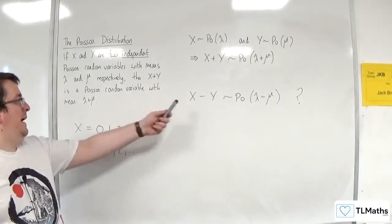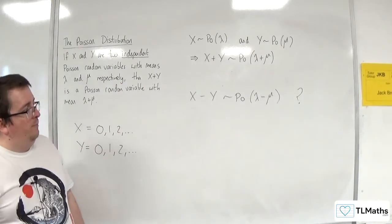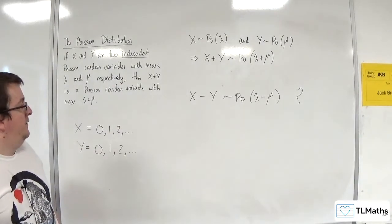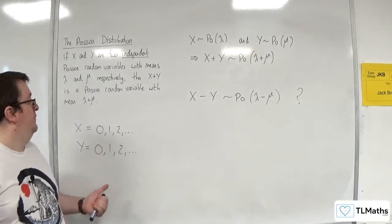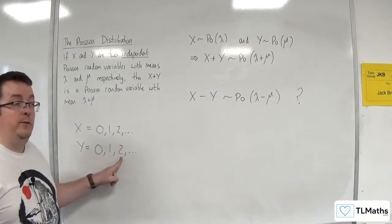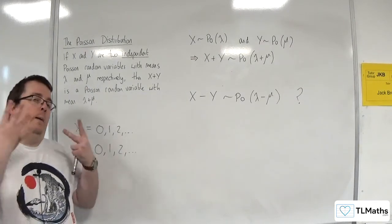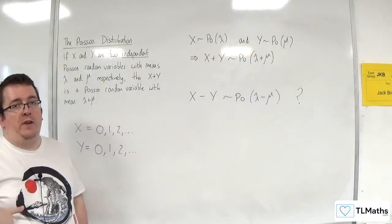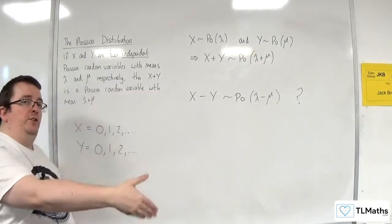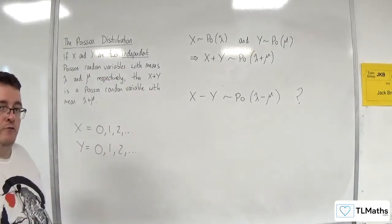But if you do X take away Y, the problem is that the result you get could be negative. You could have 1 take away 2, for example. But we can't have minus 1. A Poisson distribution goes from 0, 1, 2, 3, etc., forever and ever.